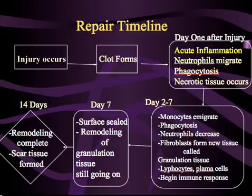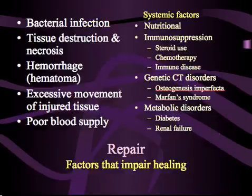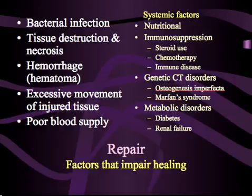By day 14, often the remodeling phase is complete. Proliferation has completed and tissues begin to mature. This maturation process, and even the earlier phases of healing, may take many weeks depending on other factors that could impair healing. Bacterial infection, tissue destruction and necrosis, hemorrhage or hematoma, excessive movements of the injured tissue, and a poor blood supply — such as that seen in diabetic patients — are just a few of the factors that could delay healing.